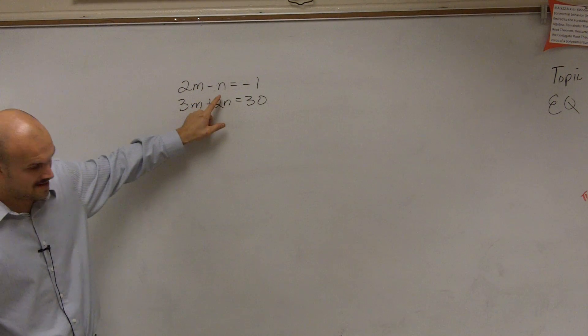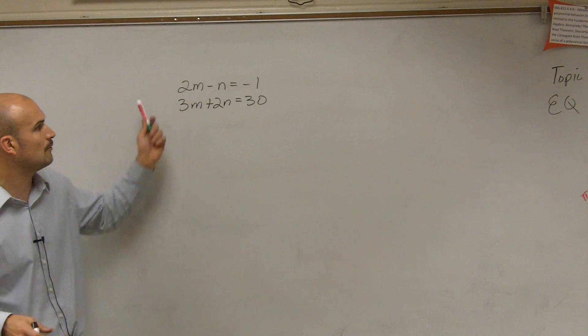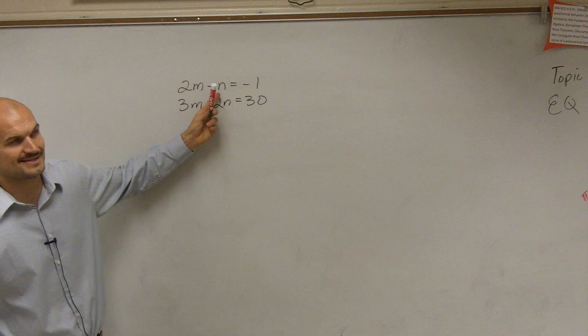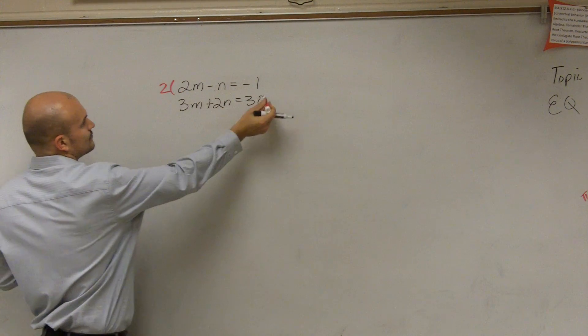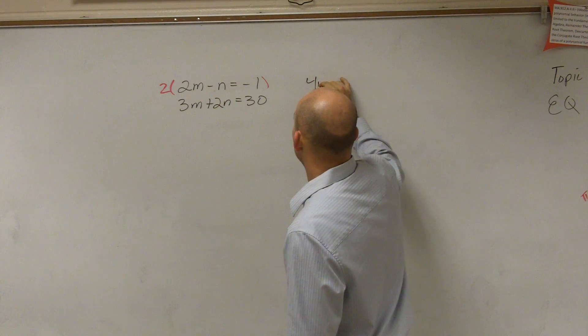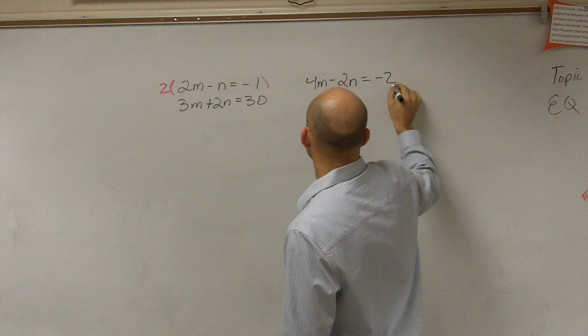It would be pretty easy to get these to be the same, because all I would have to do is multiply the top equation by 2 to get it to have a 2 in front. If I multiply this top equation by 2, everything by 2, I now obtain 4m minus 2n equals negative 2.